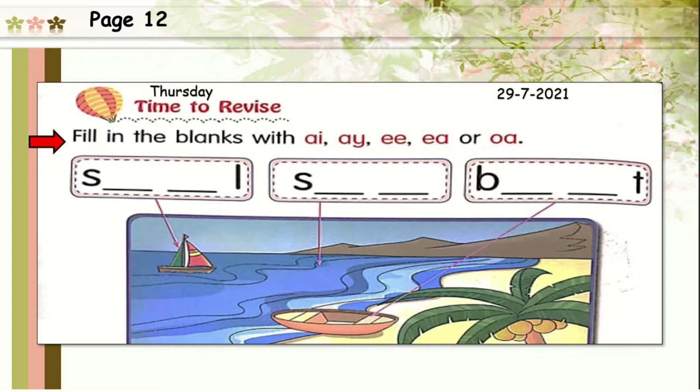Now let's see the first one. So what can you see here, dear students? Yes, very good! It's a sail. So how do you spell sail? S-A-I-L. Which is the correct word to fill in the blanks? A-I-L, sail. Very good!